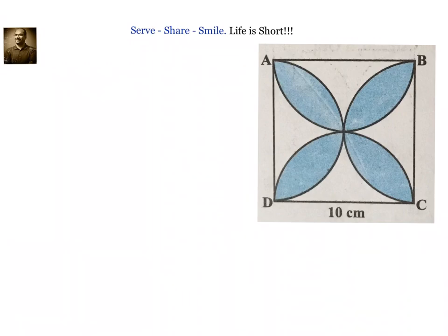Since we see that the shaded region is symmetrically divided, let's try to divide the given figure into four parts. Now if you are able to find out this shaded region, then multiply that with four and we should be able to get our answer. Also, we see that if you join these two points, this area is also symmetric. So if you are able to find out one segment area with respect to the quadrant, then multiply that with eight and we should be able to get our answer.